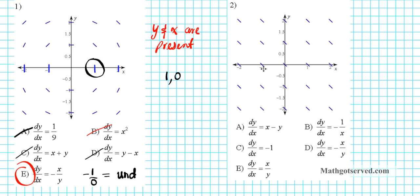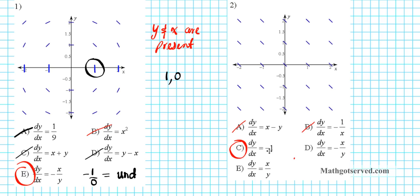Now let's take a look at number 2. We examine the slope field and notice that all the lines have exactly the same steepness. That tells us this slope field is independent of x or y — it is a constant slope field. So the differential equation should have neither x nor y; it equals a constant. The only option that satisfies this is option C, which is the only one without x or y.